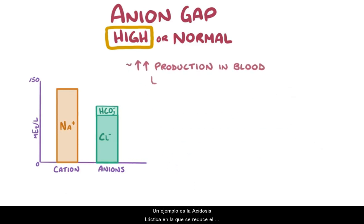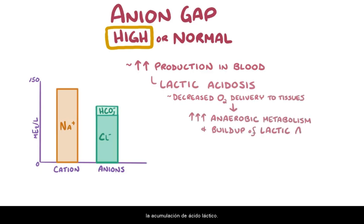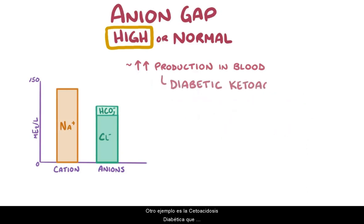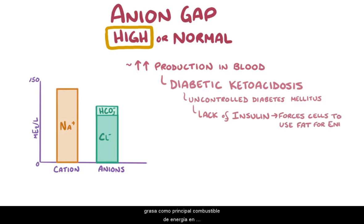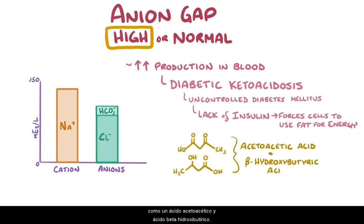One example is lactic acidosis, where decreased oxygen delivery to the tissues leads to increased anaerobic metabolism and the buildup of lactic acid. Another example is diabetic ketoacidosis, which can happen in uncontrolled diabetes mellitus, where the lack of insulin forces cells to use fats as primary energy fuel instead of glucose. Fats are then converted to ketoacids, like acetoacetic acid and beta-hydroxybutyric acid.